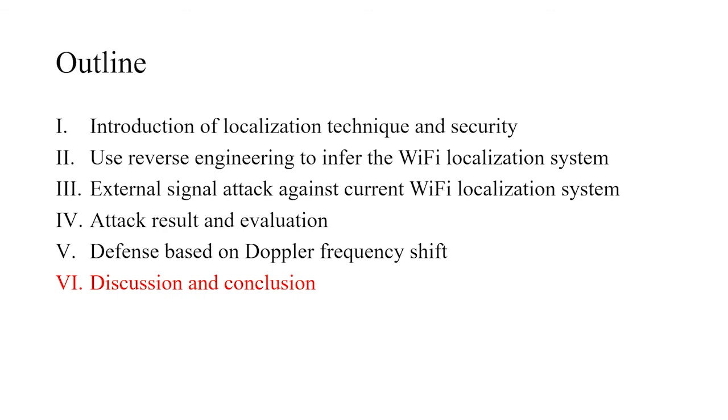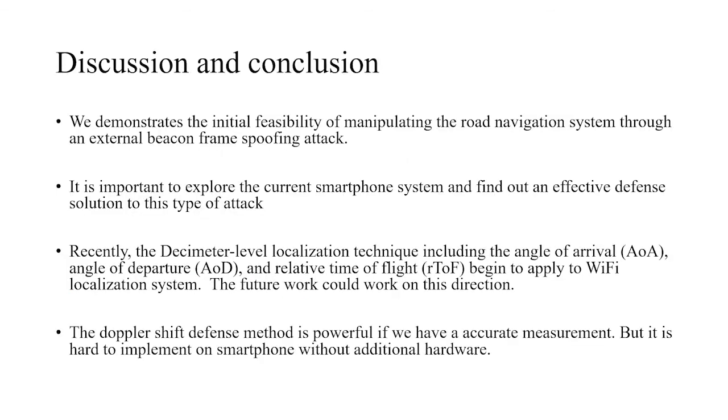Now we go to the sixth part: discussion and conclusion. In this paper, we show an attack against the cellular localization system through our designed external spoofing attack. We also show it's important to explore the current localization system and find out an effective defense solution for this type of attack. Third, we found that many new techniques begin to apply to WiFi localization systems. Our future work should focus on this direction. Fourth, the Doppler shift defense method is powerful, but it's actually not easy to implement on smartphones because of the hardware issue.